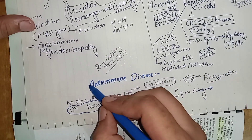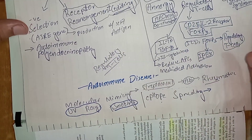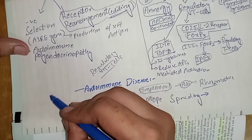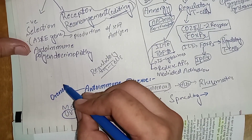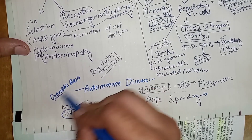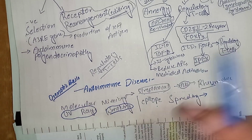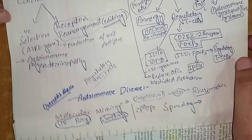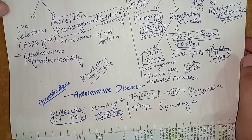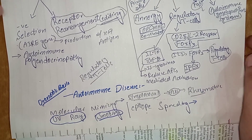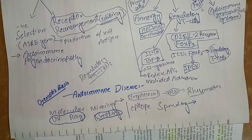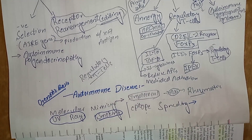Autoimmune diseases occur due to breakdown in central or peripheral tolerance and have a strong genetic basis — if a person has an autoimmune disease, there are strong chances their offspring may develop one as well. However, a person without a genetic predisposition can also develop autoimmune disease due to environmental factors. This was a general overview of autoimmune diseases; common autoimmune diseases will be discussed in the next lecture.